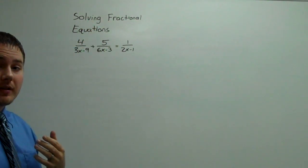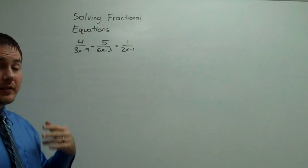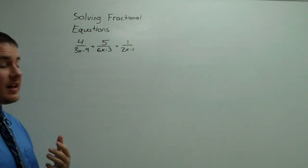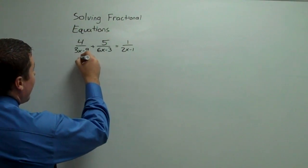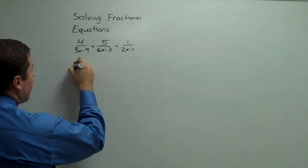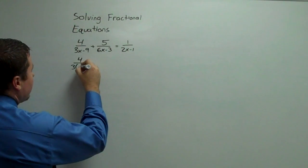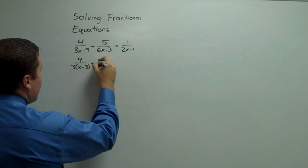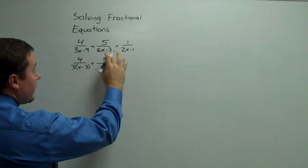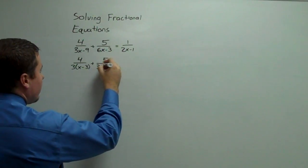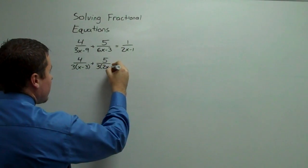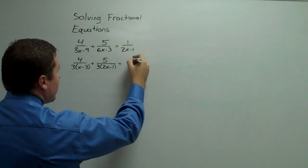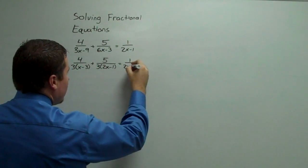Now these might look like completely different denominators, but two of them factor. If we're lucky, we'll get a nice LCD out of all this. Factoring a common 3 out of the first denominator gives us 3 times x minus 3. The second denominator also has a common 3, giving us 3 times 2x minus 1.